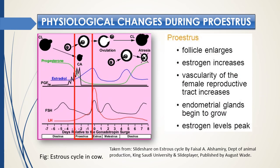In the previous discussion I covered changes in the ovary, changes in the uterus, and in the vaginal cytology in small animals like rat and mice. Here I want to talk about the physiological changes during each stage of the cycle — specifically, the changes during proestrus in the estrus cycle in a large animal, the cow.